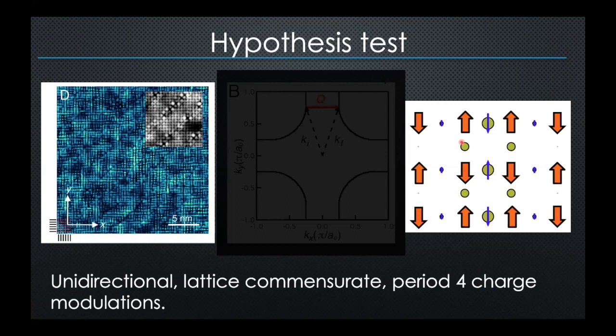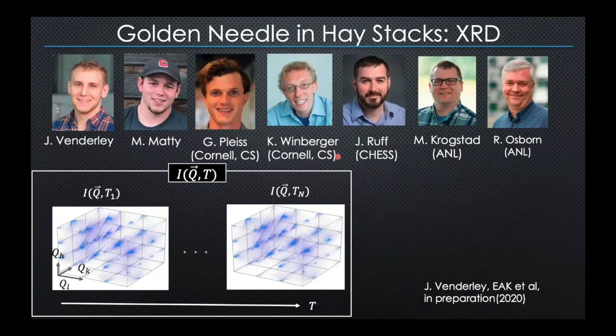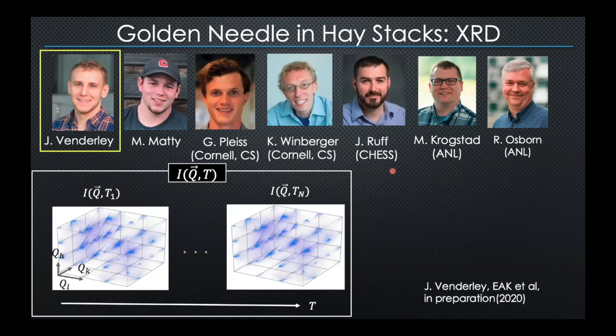Now I'll switch gears to unsupervised machine learning for high-volume XRD data. This work was done in collaboration with Killian Weinberger, a computer science colleague at Cornell; Jeff Plyce, a student; my student Jordan Vandeley, who did the lion's share of the work; Jacob Ruff at CHESS, who provided a lot of data; and collaborators Matt Croxted and Ray Osborne at Argonne National Lab.